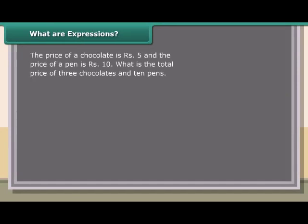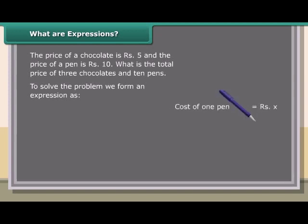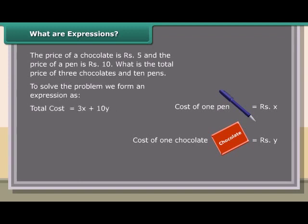What are expressions? The price of a chocolate is rupees 5, and the price of a pen is rupees 10. To find the total price of 3 chocolates and 10 pens, we form an expression: cost of 1 pen = rupees x, cost of 1 chocolate = rupees y, cost of 3 chocolates = 3y, cost of 10 pens = 10x. Total cost = 3x + 10y = 3×5 + 10×10 = 15 + 100 = 115 rupees.